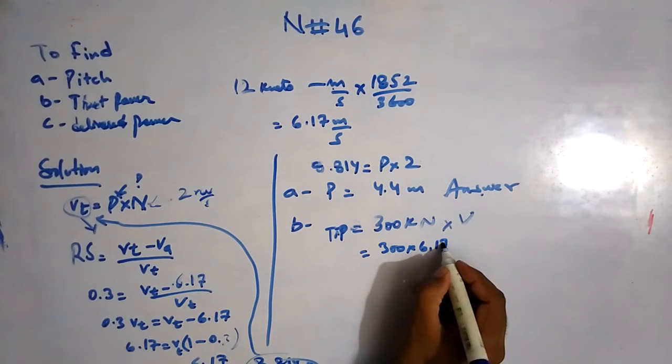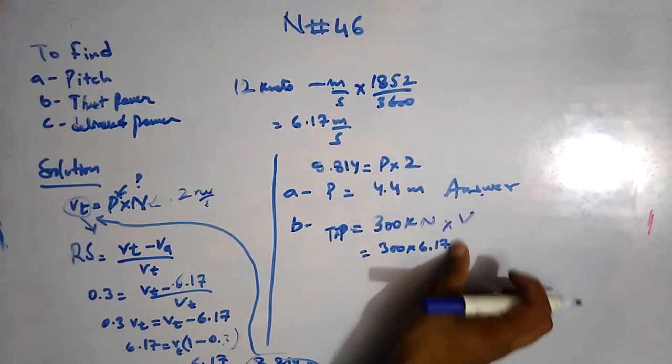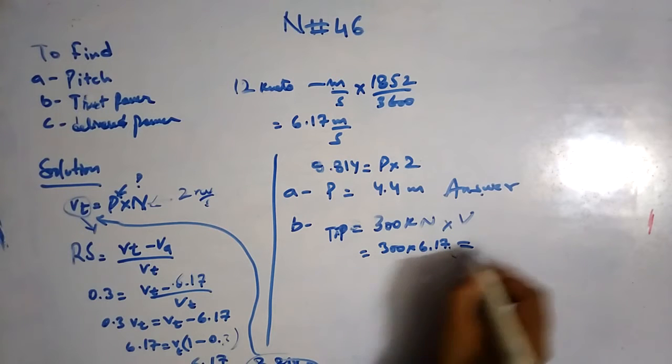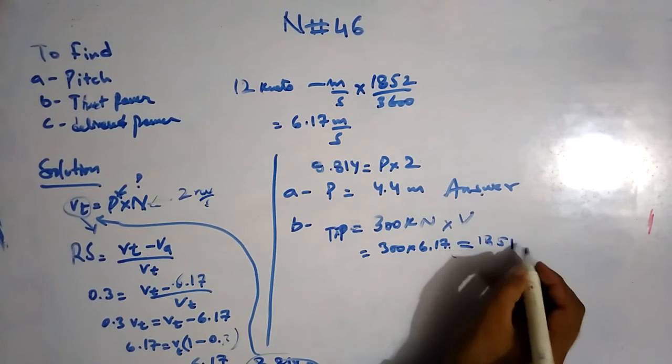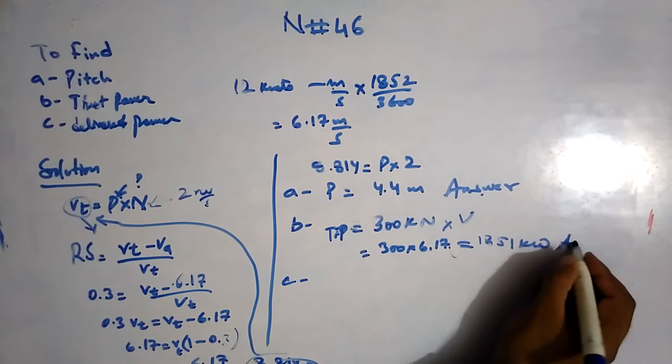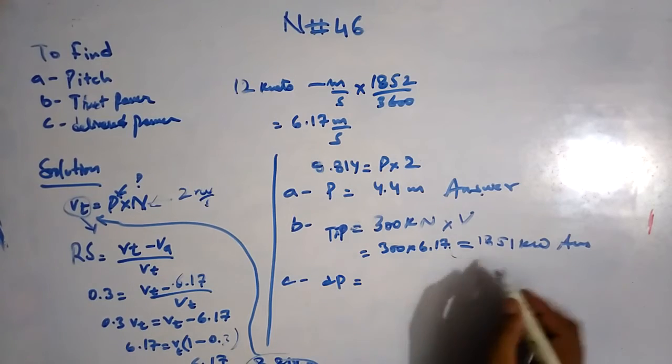TP, I can write short: 300 into 6.17. This is the speed of advance, so 300 into 6.17 gives 1851 kilowatts. This is the part B answer.